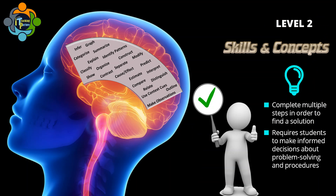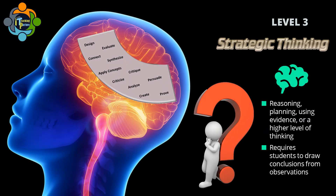Level two is Skills and Concepts. The second level requires students to make informed decisions about problem solving and procedures, manipulating level one thinking in new contexts. Students may be asked to complete multiple steps in order to find a solution — like collecting and then displaying data in a chart. Examples of level two activities include: infer, categorize, collect and display, classify, separate, modify, and predict. After your starter, you can use level two to proceed towards your objectives.